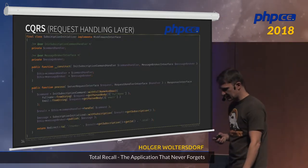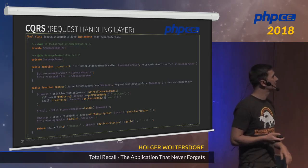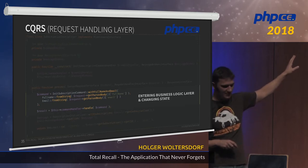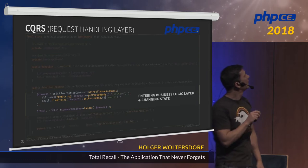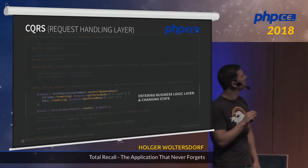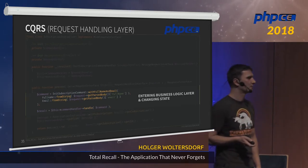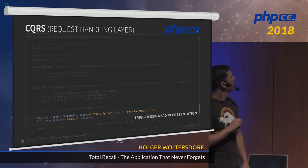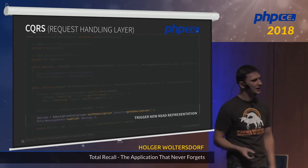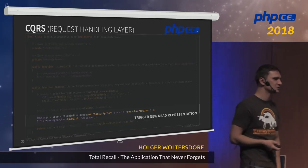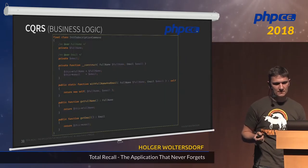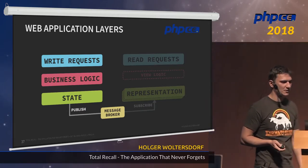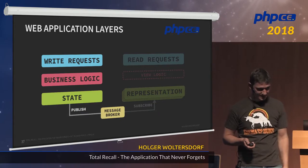This is the middleware that applies after validation has passed. Two important things happen: we create a command called InitSubscriptionCommand and pass the full name and email address as value objects, then send this command to the command handler. After that, we produce a message which we send to the message broker to say we have changed the application state because we added a new subscription. All we have done so far covered the left side of our model — a complete write request, business logic, state change, and a published message to the broker.